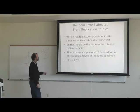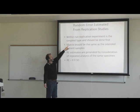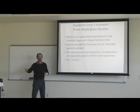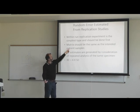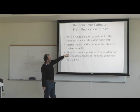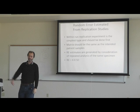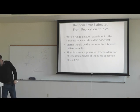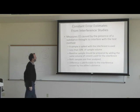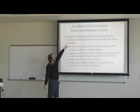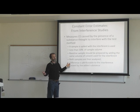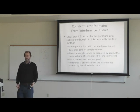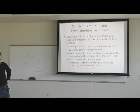Random error estimates from replication studies: within-run replication experiments are the simplest and should be done first. The matrix should be the same as the intended patient samples — if you're running serum, use serum. Random error estimates are generated by repeated analysis of the same specimen, and the estimate will be four times the standard deviation.